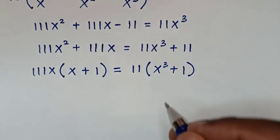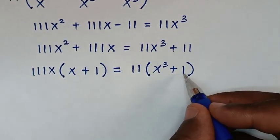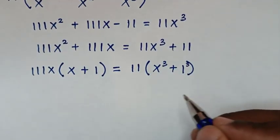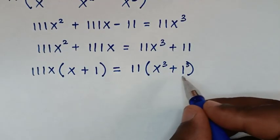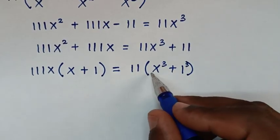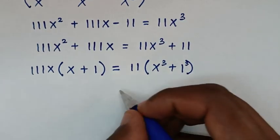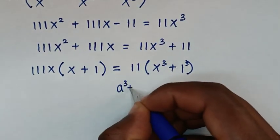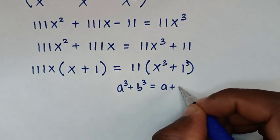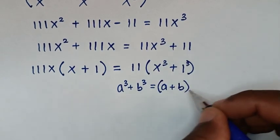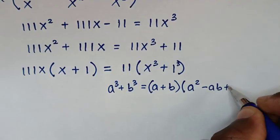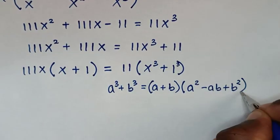In the next step, we note that x power 3 plus 1 is the same as x power 3 plus 1 power 3. This is in the form of a sum of cubes, so we'll apply the perfect cube rule: a power 3 plus b power 3 equals (a plus b) times (a squared minus ab plus b squared).